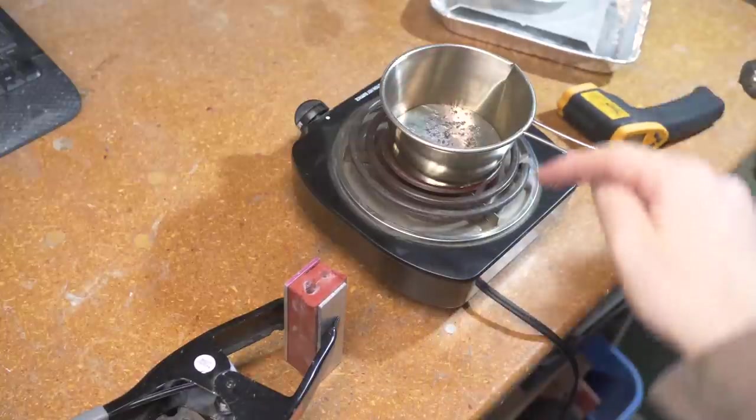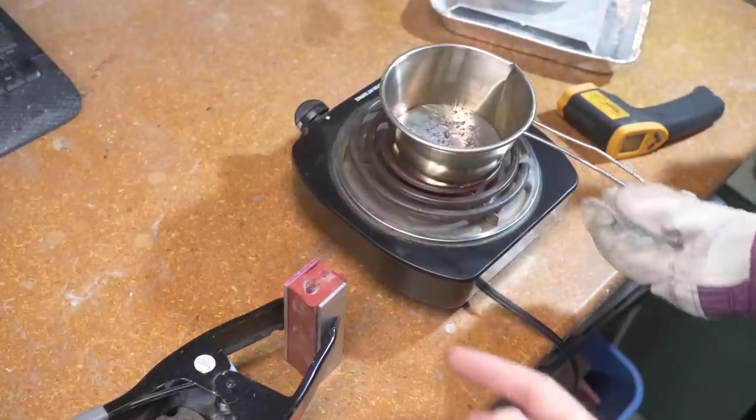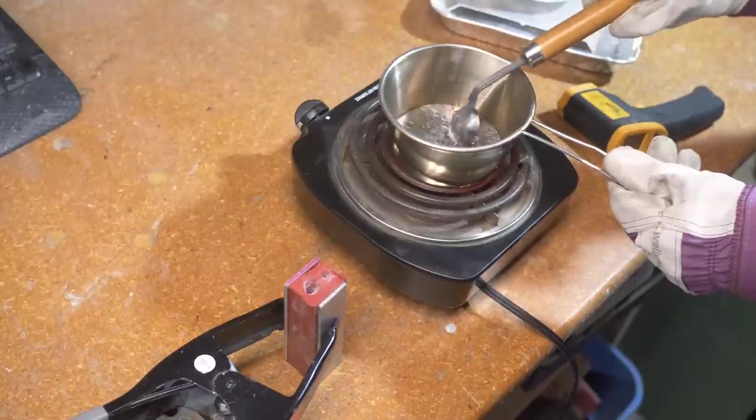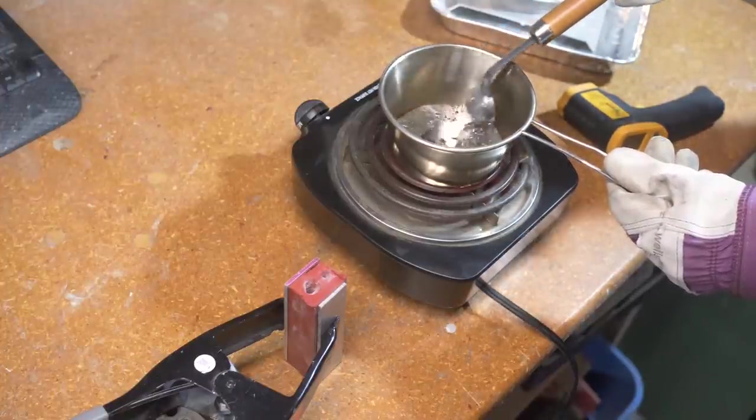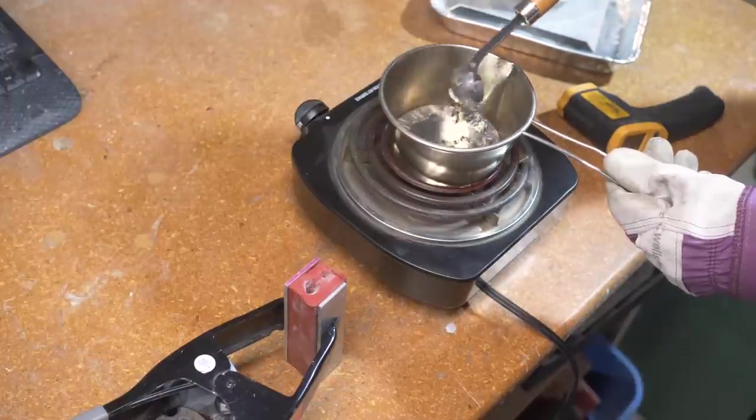Now when we pour it, we want to make sure that any of the cruddy dross or slag on the top there doesn't make it down into the mold. So Brit can just kind of skim off what she can, and then when we pour it make sure that none of that goes down the pouring spout.